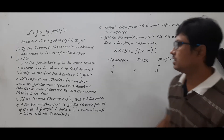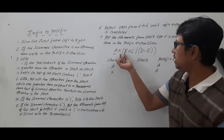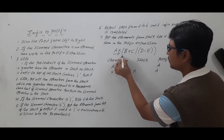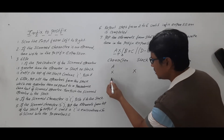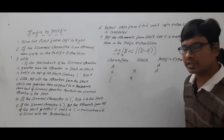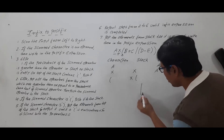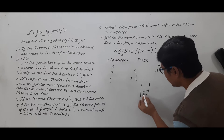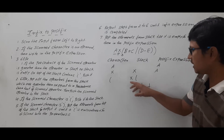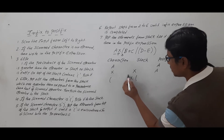Next rule: if the scanned character is an open parenthesis, directly push it into the stack. For example, after scanning multiplication, if the next character is an open parenthesis, we just push it. So the stack would have multiplication at the bottom and the open parenthesis on top.